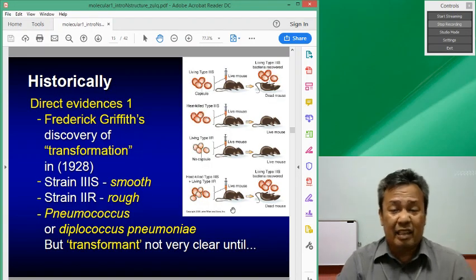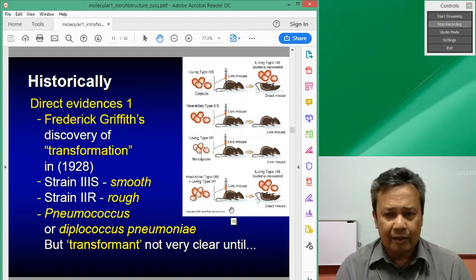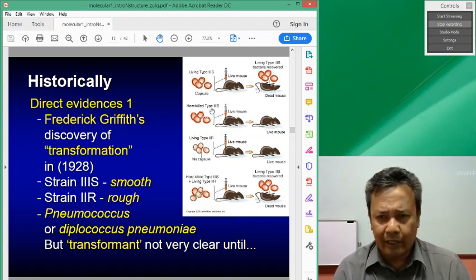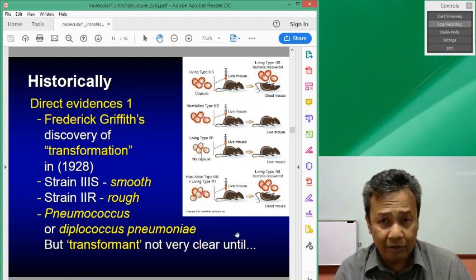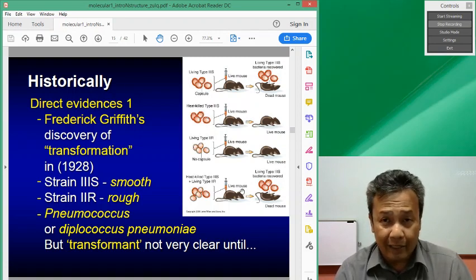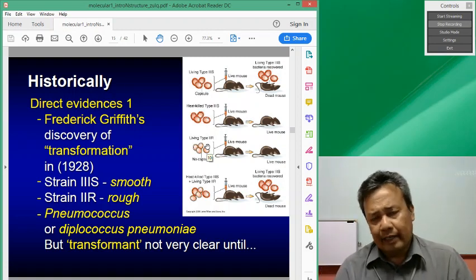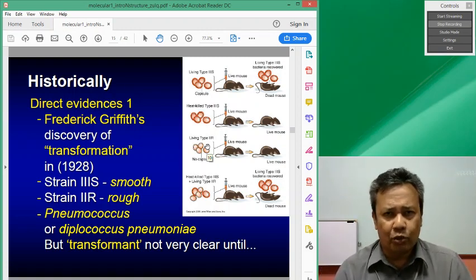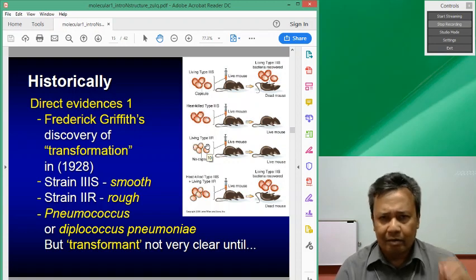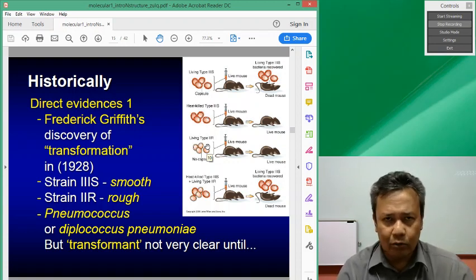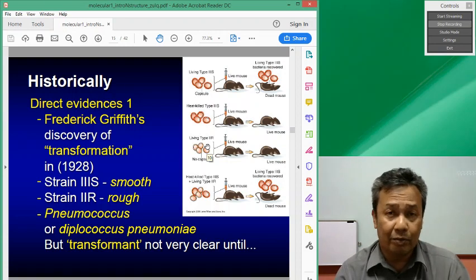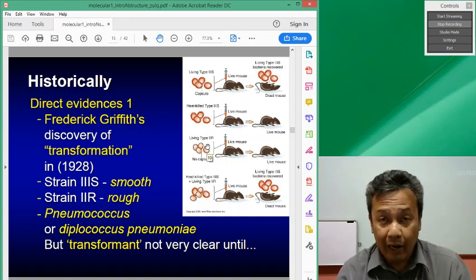In 1927, Frederick Griffith did different types of experiments. What's important in this experiment is that you have two types of bacteria: the 3S and the 2R. It's important to understand that these two strains do not interchange. 3S will always grow as 3S and 2R will always be 2R.